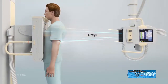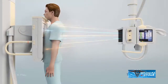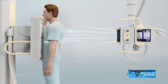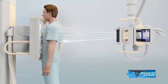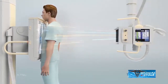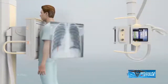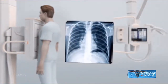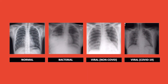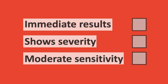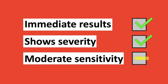The chest radiograph uses X-ray beams which are highly charged with electrons that pass through the body. It can be used efficiently to complement other diagnostic methods. It gives immediate results and the images show correlation with the disease severity. However, it has lower sensitivity compared to CT.